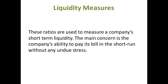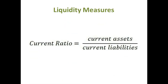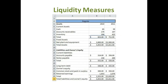The current ratio is one of the most commonly used ratios. It is calculated as current assets divided by current liabilities. In our example on the balance sheet, we have $653,000 in current assets and $552,000 in current liabilities. Since current assets and current liabilities are converted to cash over the next 12 months, the current ratio is a measure of short-term solvency. It is measured in times or in dollars.